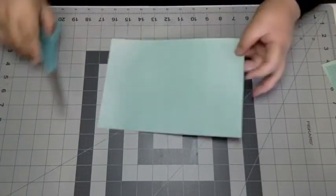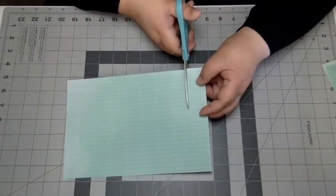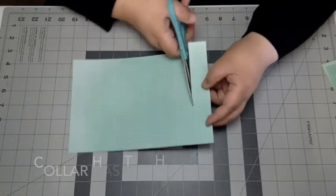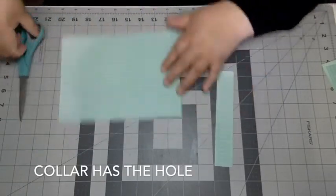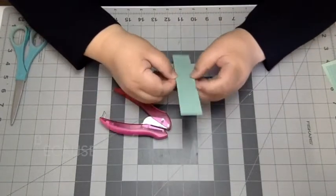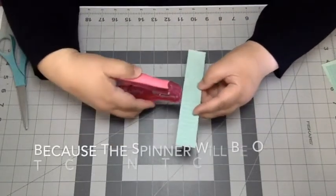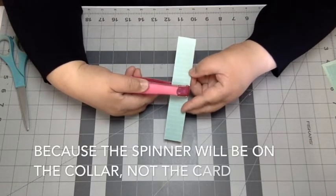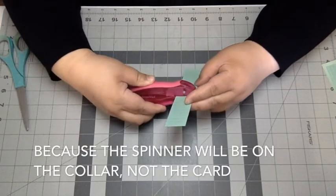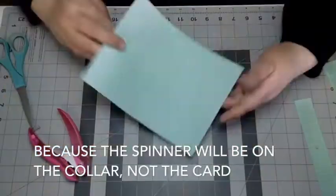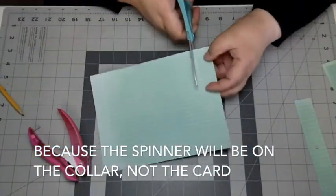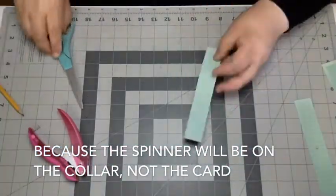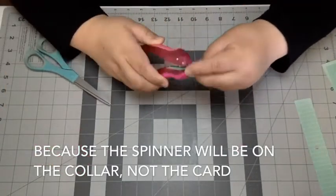Here, I'm just going to cut out a slip of paper. This is the only difference between the spinner in the previous video and this one, is that I'm making the hole inside of this strip of paper, as opposed to onto the card itself. Because the spinner is going to be on this strip of paper, I'm calling the collar, as opposed to being on the card. It's not going to be attached to the card, it's going to be on the collar.